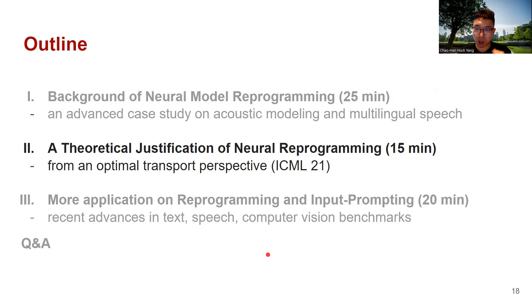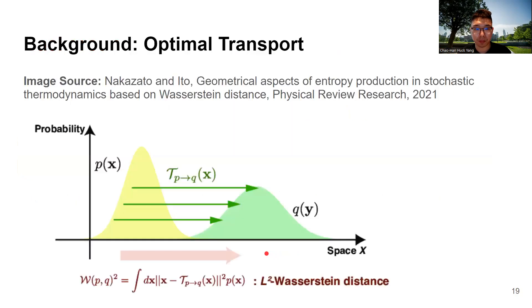We come to the second part: a theoretical justification of neural reprogramming. Before going into the detail, let's have a brief overview of optimal transport.